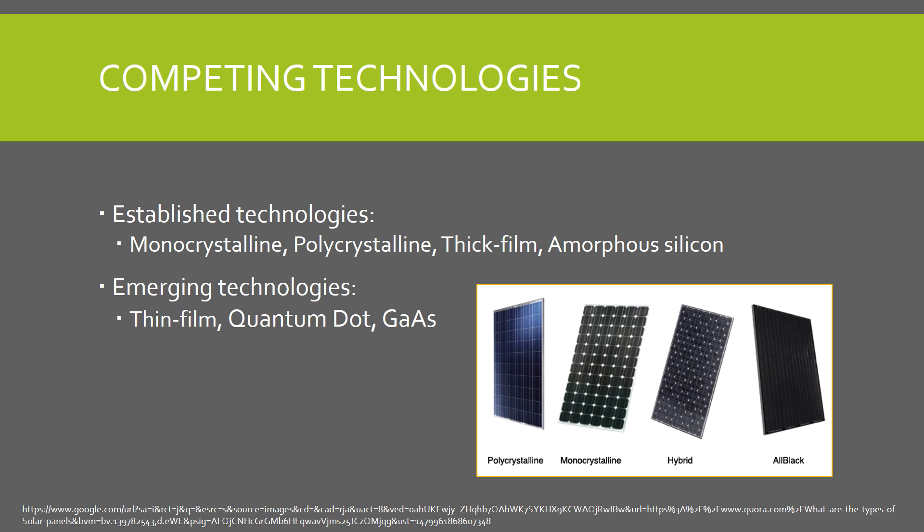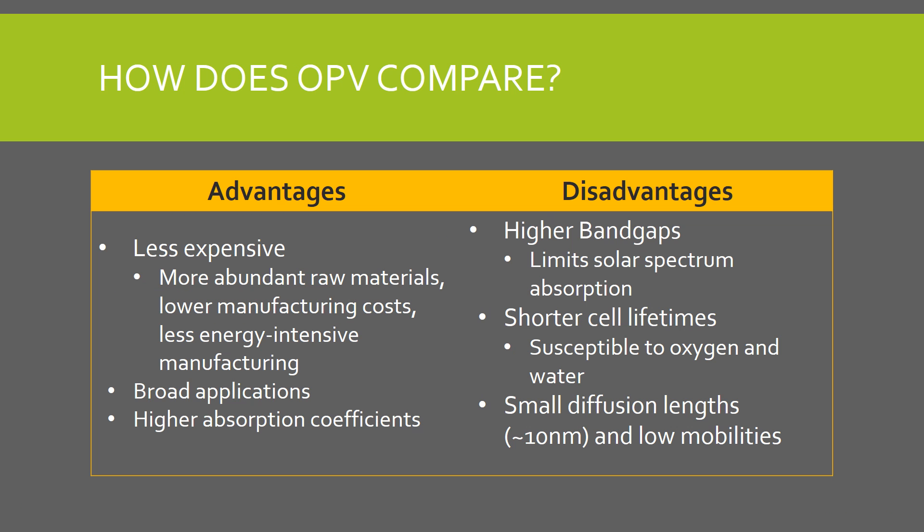OPV competes with established photovoltaic technologies like mono and polycrystalline, thick film, and amorphous silicon cells, and other emerging technologies like thin film, quantum dot, and gallium arsenide solar cells. So how do they compare? As I mentioned earlier, OPV is cheaper and has broader applications than most of these technologies. Furthermore, organic cells have high absorption coefficients.